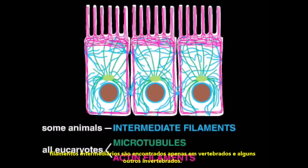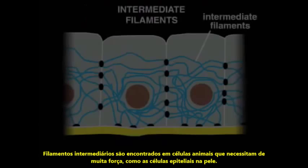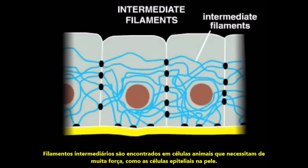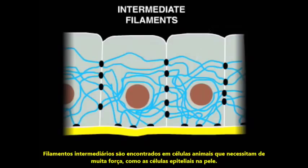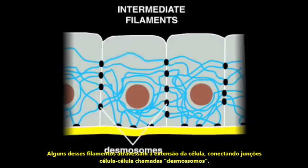Intermediate filaments are found in animal cells that require a lot of strength, such as the epithelial cells of the skin. Some of these filaments span the length of the cell, connecting cell-cell junctions called desmosomes.